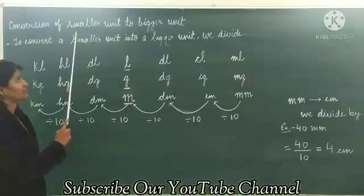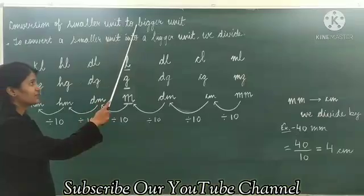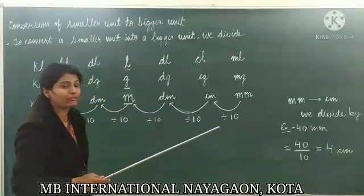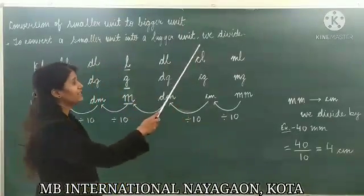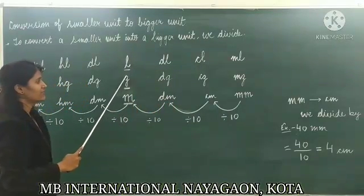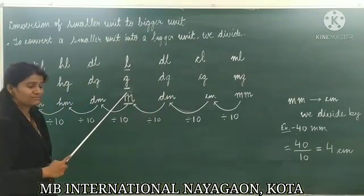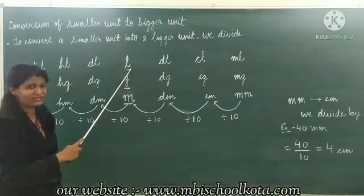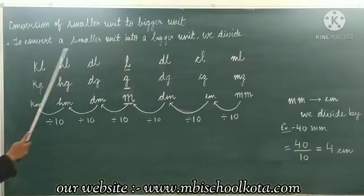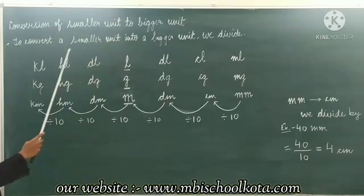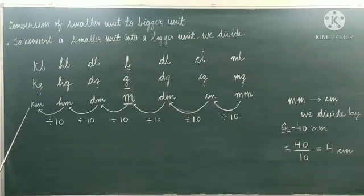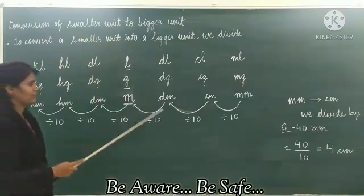To convert smaller unit into bigger unit, we divide — we do not multiply. The basic unit of weight is gram, basic unit of length is meter, and basic unit of volume is liter. Kiloliter is the biggest unit of volume, kilogram is the biggest unit of weight, and kilometer is the biggest unit of length.